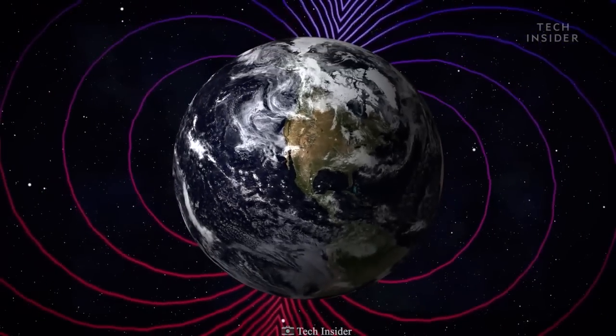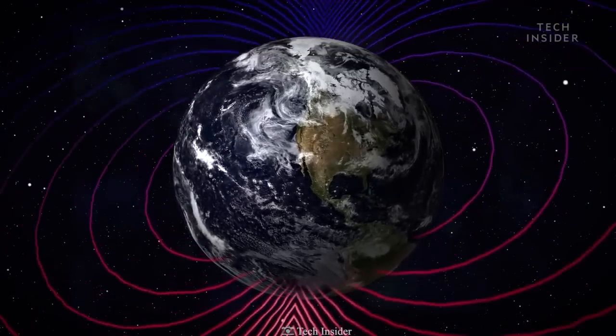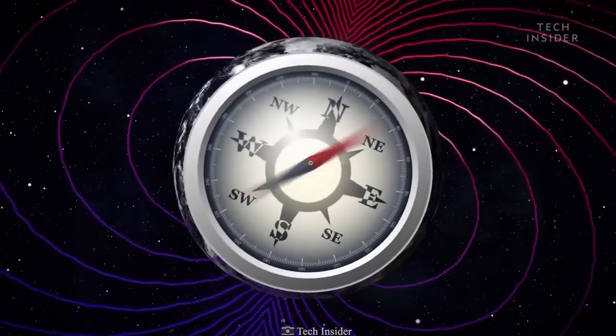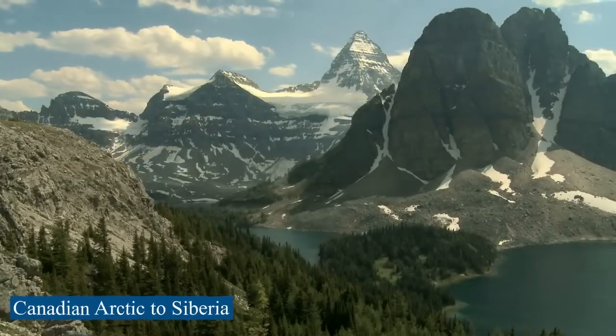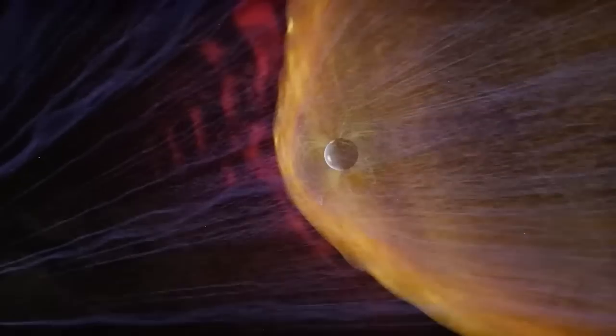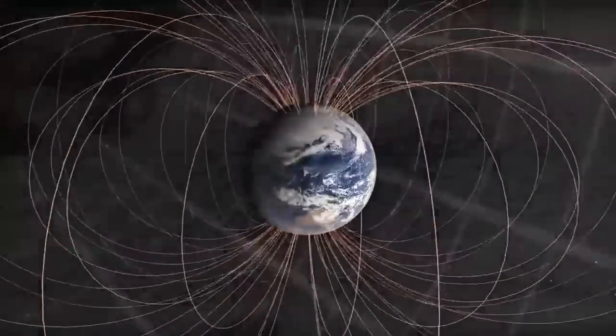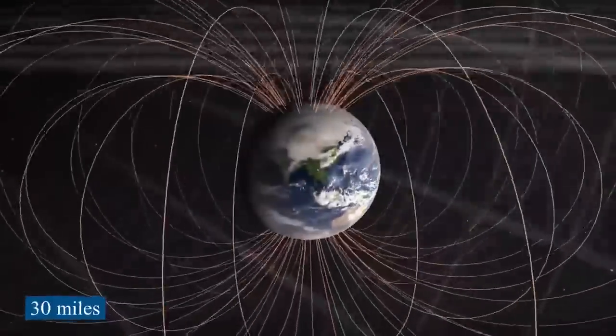Something weird is going on with the Earth's magnetic field. Over the last 200 years, it has significantly weakened and relocated its magnetic north pole from the Canadian Arctic to Siberia. But in the last few decades, the slow migration south has sped up, reaching speeds of up to 30 miles each year.